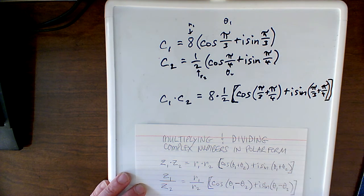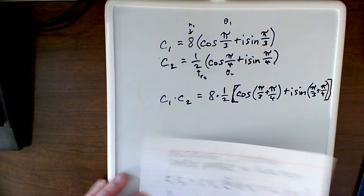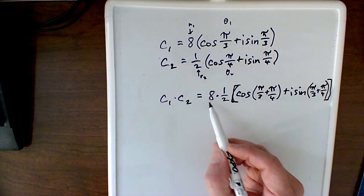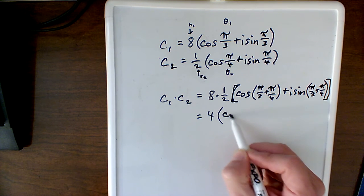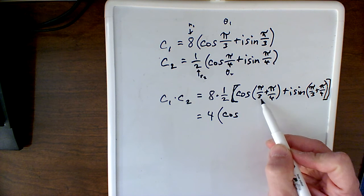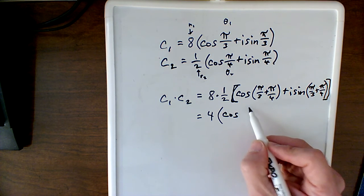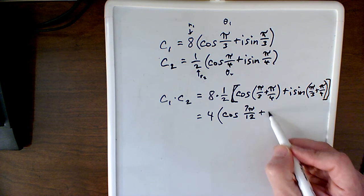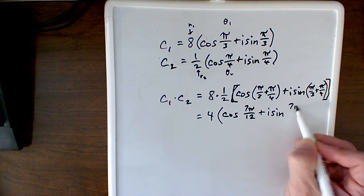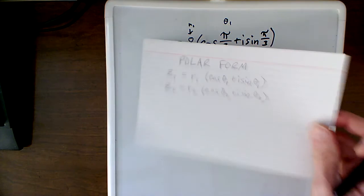Okay, so now we can do some simplifying. So 8 times a half, we know that's equal to 4, and this is going to be cosine of pi over 3 plus pi over 4. Now we're going to have to do our adding using common denominators. I won't do the work for that, but that ends up being 7 pi over 12 plus i sine of 7 pi over 12. Okay, so that is our answer, but we're still in polar form.